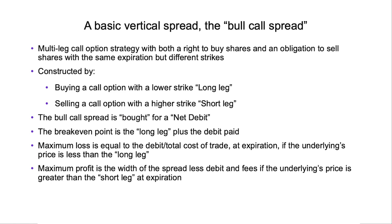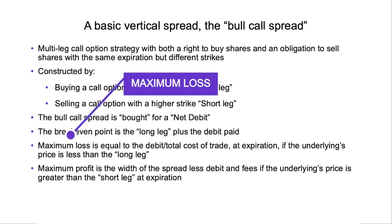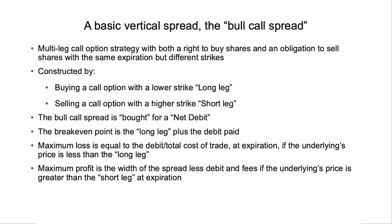Obviously, we hope that the stock is going to be higher than the break-even. The maximum loss is equal to what we spent on the trade at expiration — you can't lose more than what you paid. We experience maximum loss at expiration if the underlying price is less than the long leg. If it's lower than the long leg at expiration, the call option we bought has no intrinsic value and no time value — it expires worthless. If the long leg expires worthless, the short leg also expires worthless, meaning the entire bull call spread is worthless.